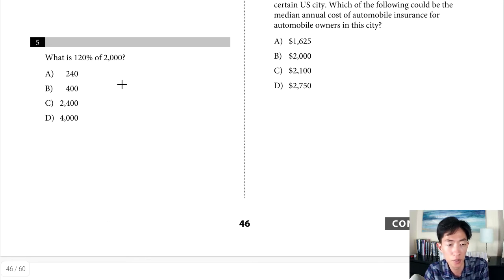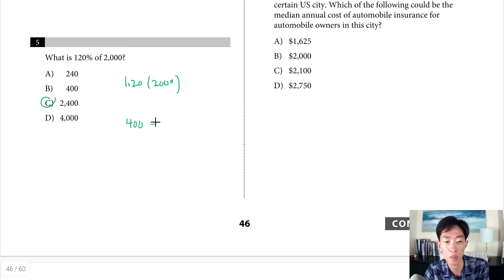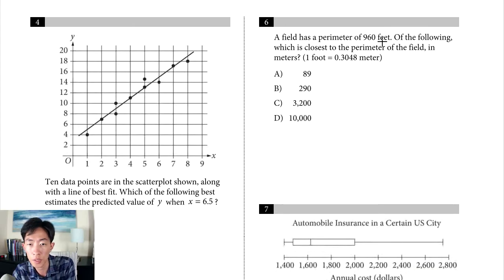Question 5: what is 120 percent of 2000? Using a calculator, multiply 1.2 times 2000 to get 2400, so C is the answer. To do it mentally, find 20 percent of 2000 — that's one-fifth of 2000, which is 400 — then add that to the original 2000 to get 2400.